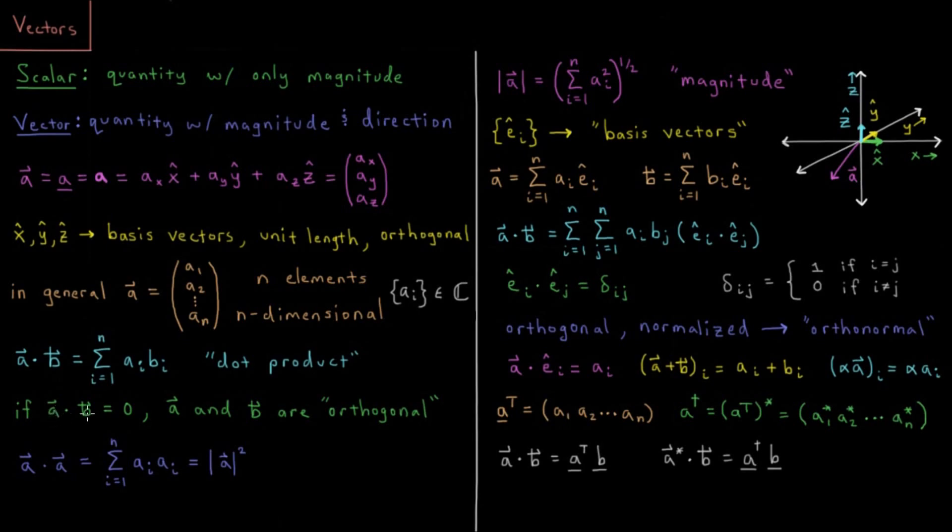And then if the dot product of two vectors is equal to zero, then we would say that a and b are orthogonal to one another. We can then get the magnitude of a given vector by taking its dot product with itself. So the sum from i equals one to n, sum over all elements of ai times ai. So each element squared, that is the square magnitude of our vector. This is basically like the Pythagorean theorem in n dimensions. So that gives us that the magnitude of the vector is the sum of each of these elements squared, all taken to the one half power.